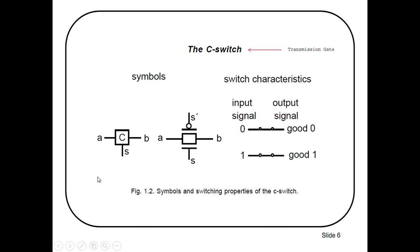We can use a C-switch to obtain both strong 0 and strong 1 at the same time. Here you can see the block-level diagram and the circuit-level diagram of a C-switch, which is implemented by connecting a PMOS transistor and an NMOS transistor together. This C-switch can pass a good 0 or good 1 at the same time.